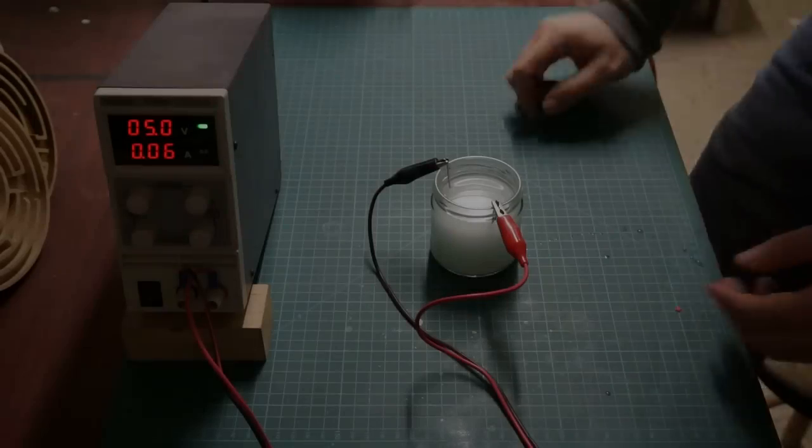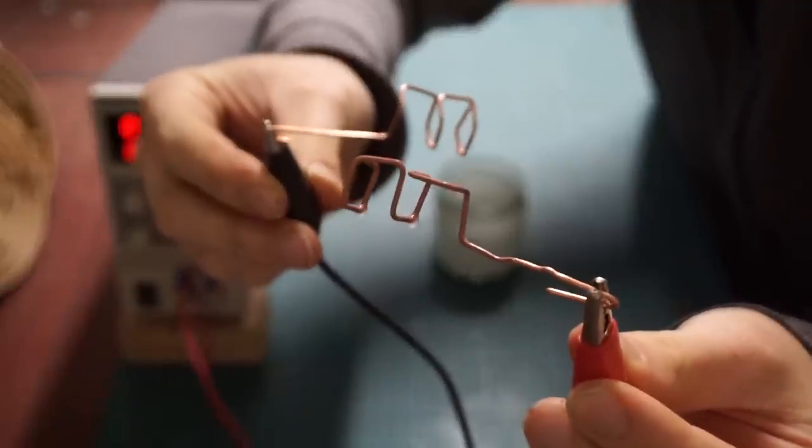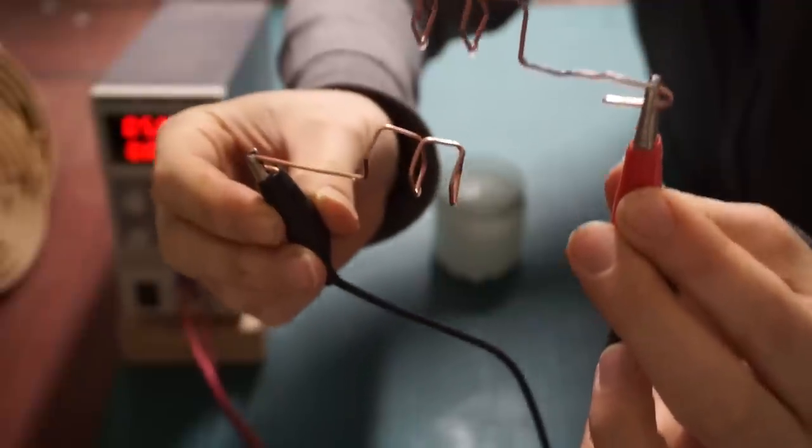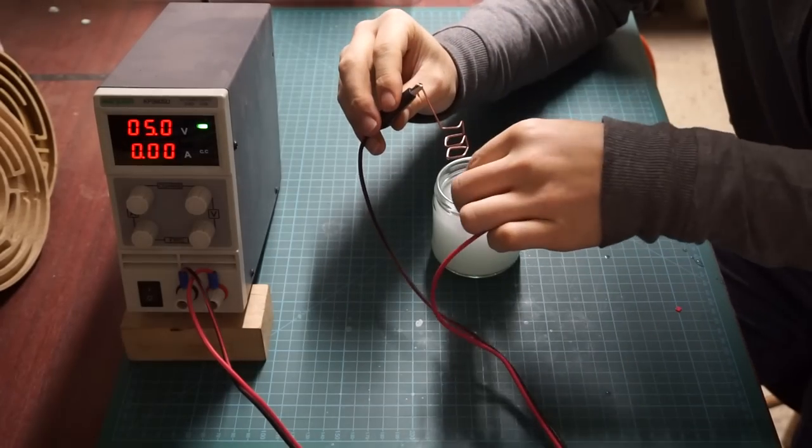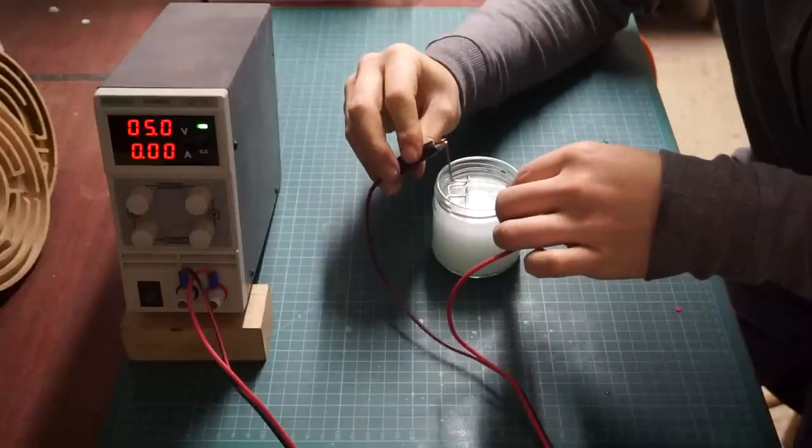Now we can start applying current to the solution. I did not limit the current on the power supply. Depending on how much baking soda was in solution at any given time the bath drew between 70 and 100 milliamps. By not limiting the current on the side of the power supply the amount of current drawn depends purely on the conductivity of the actual fluid.